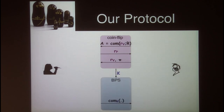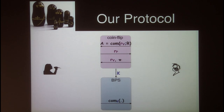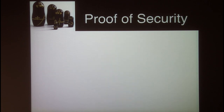Our protocol at a high level looks like this: we have the coin flipping protocol with the modification just mentioned, followed by the BPS protocol with the modification that the statistically binding commitment scheme is replaced by this mixed commitment scheme, with its parameter being dictated by the outcome of the coin flipping protocol. Our proof of security involves a lot of technical challenges, although we will not have time to go over them in detail.